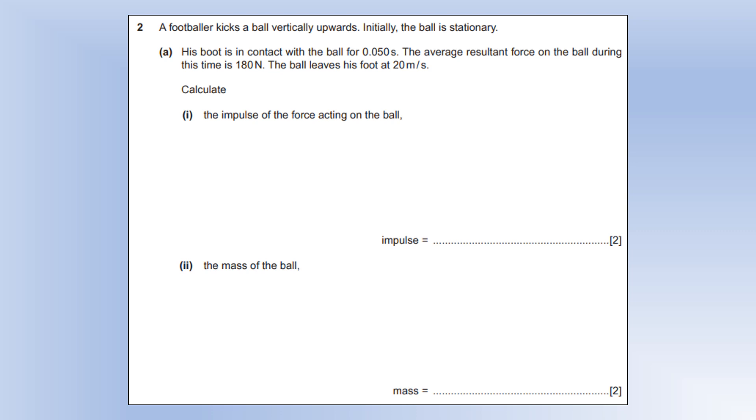A footballer kicks the ball vertically upwards. Initially, the ball is stationary. His boot is in contact for 0.05 seconds. The average resultant force on the ball during this time is 180 newtons. The ball leaves his foot at 20 metres per second. Calculate the impulse. So impulse is just change in momentum, and it's calculated by doing force times by time, giving us an impulse of 9 newton seconds.